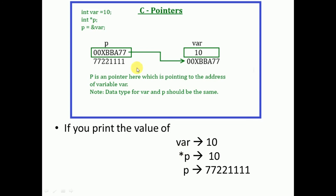Although star is used while declaring a pointer variable, whenever in your program you associate star with the pointer variable, it will be replaced with the actual value of the variable to which the pointer is pointing. That is the difference between p and *p: p gives the address stored in p, whereas *p gives the value of the variable to which p is pointing. In this example, p points to var whose value is 10, so *p prints 10.